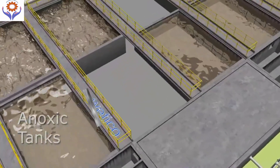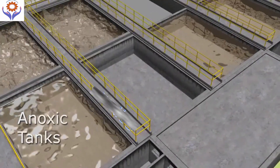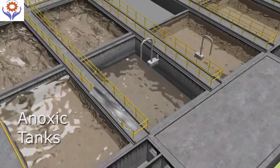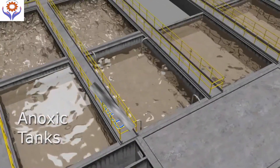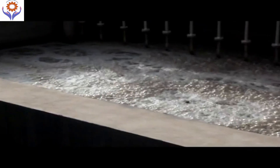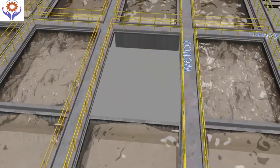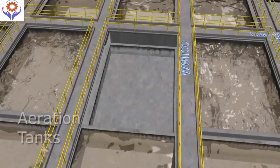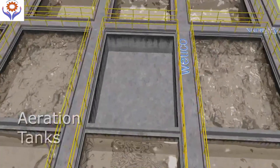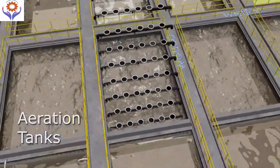Anoxic tank. Water then enters the anoxic tank. There is no oxygen in the tank. Special bacteria remove nitrogen through denitrification. This helps control nutrient pollution in treated water.